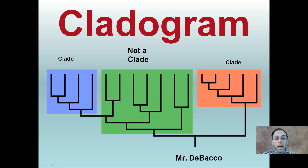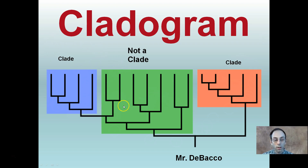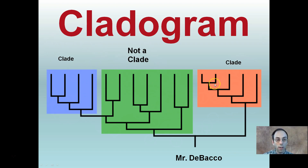You're going to be creating a cladogram in class, so hopefully this will be helpful to indicate what it should generally look like. Looking at examples here, both ends are complete groupings, while the middle one contains a split — a divergent evolution — but only contains part of that. That's why it's not considered a full classification set.